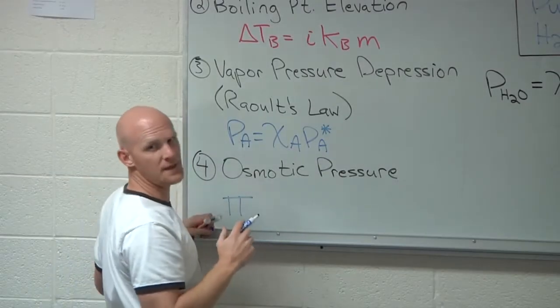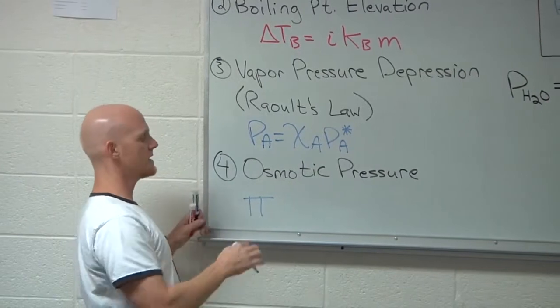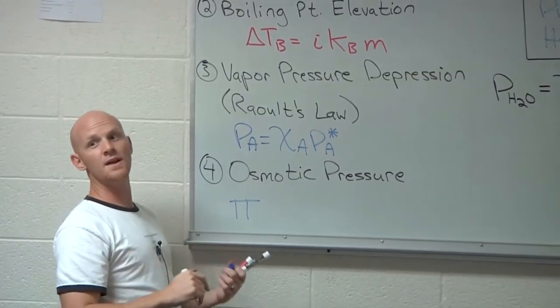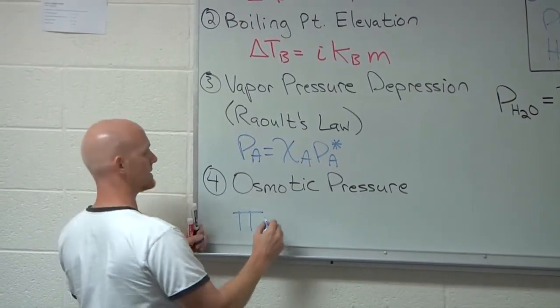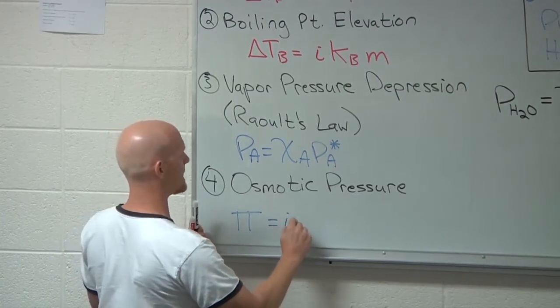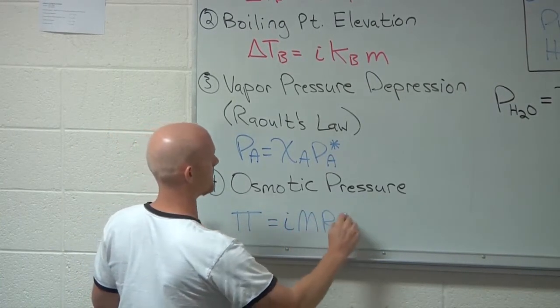For osmotic pressure, we don't use P like we do for gas pressure. For osmotic pressure, we use the Greek letter π, which is pi. So in this case, π equals IMRT.